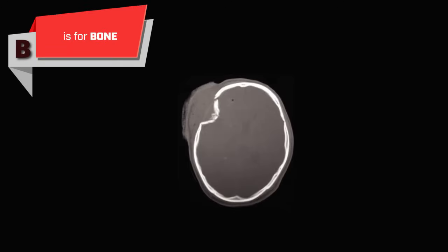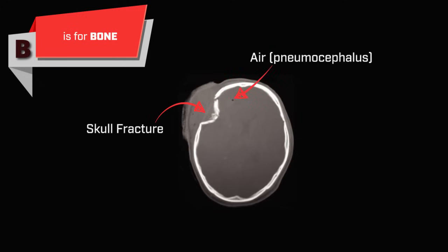B stands for bone. You are mainly looking for skull fractures. Also, any evidence of intracranial air may suggest that there may have been penetration and violation of the skull and the dura. Blood can be very bad.